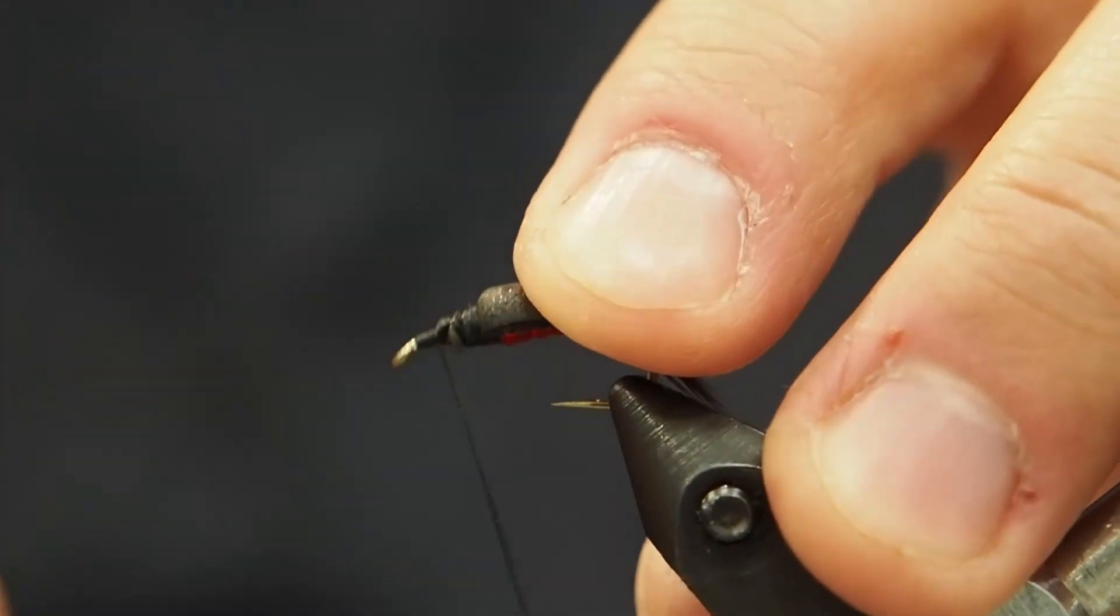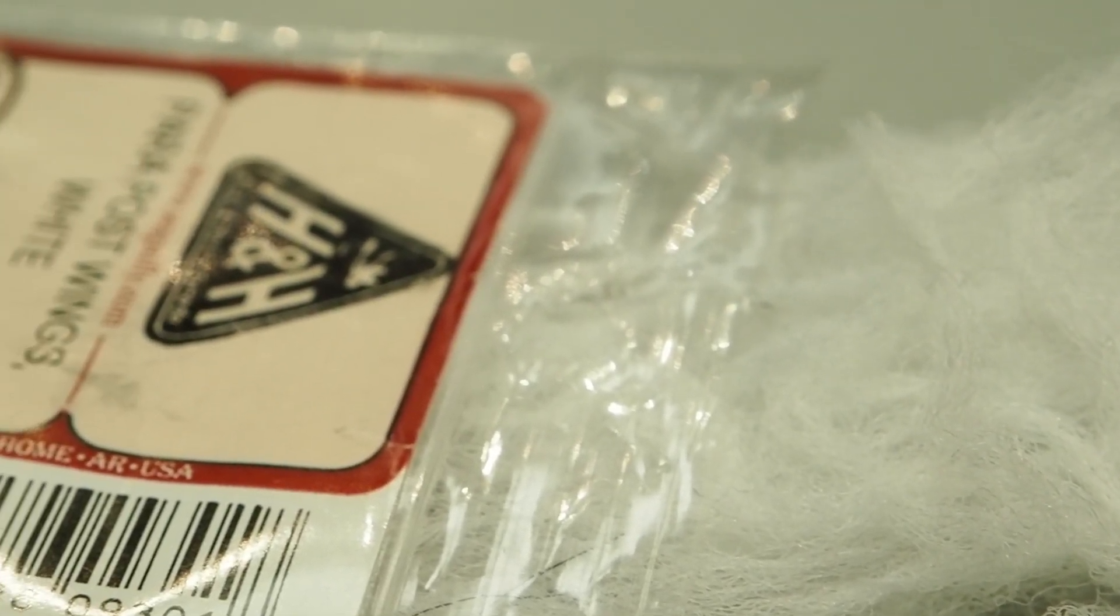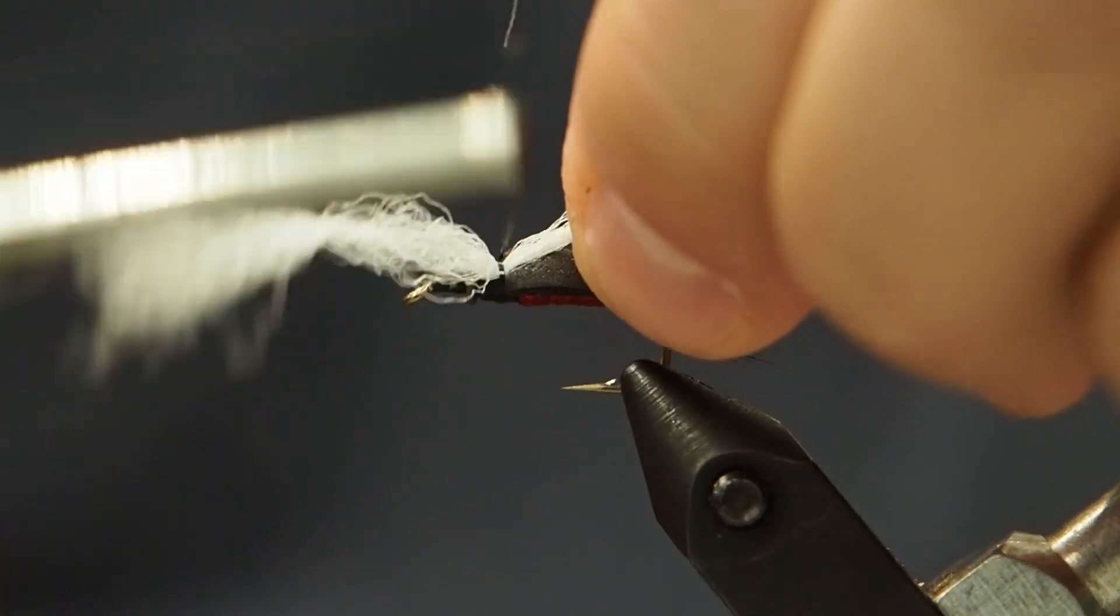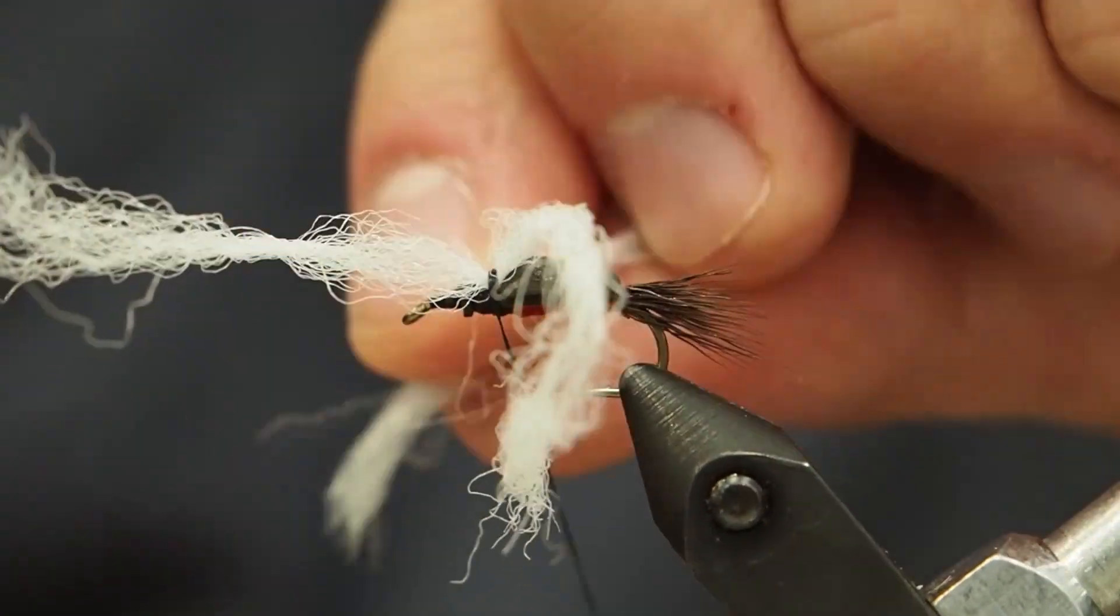Now we're going to build our wings. We're using para-post wings, very classic material. This is the water-treated stuff that you want. What I'm going to do is actually use one strand, lock it in, and then double it up for each wing. So I've got two strands, one for each wing.